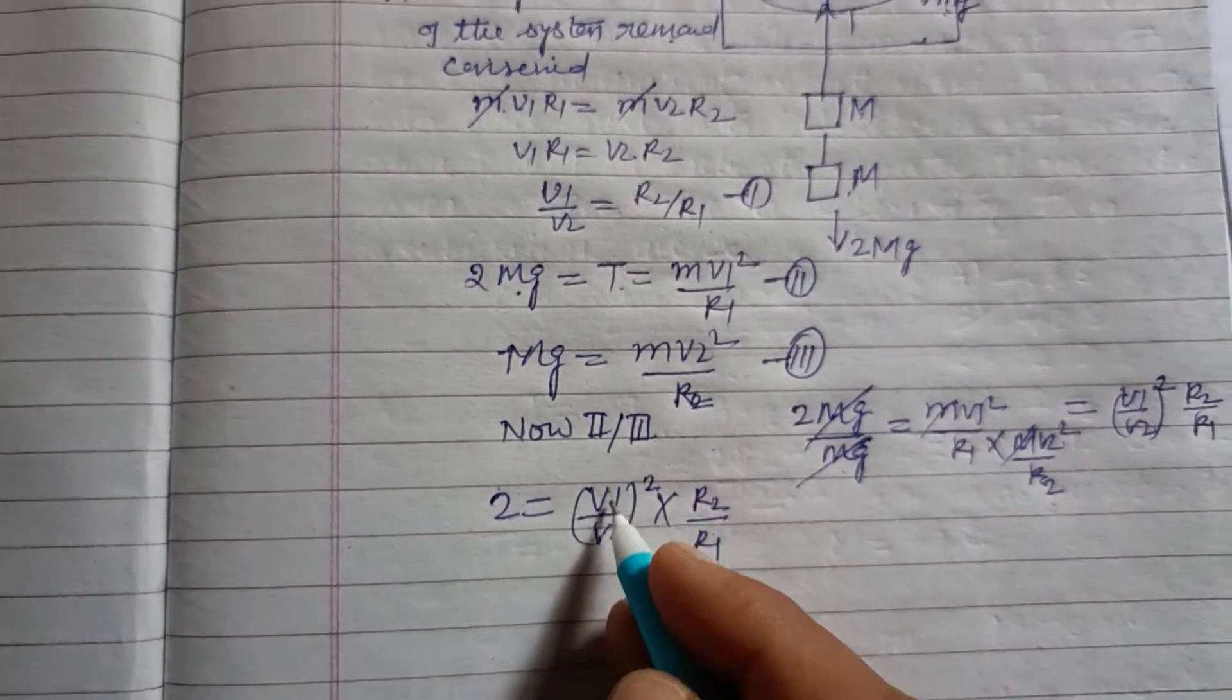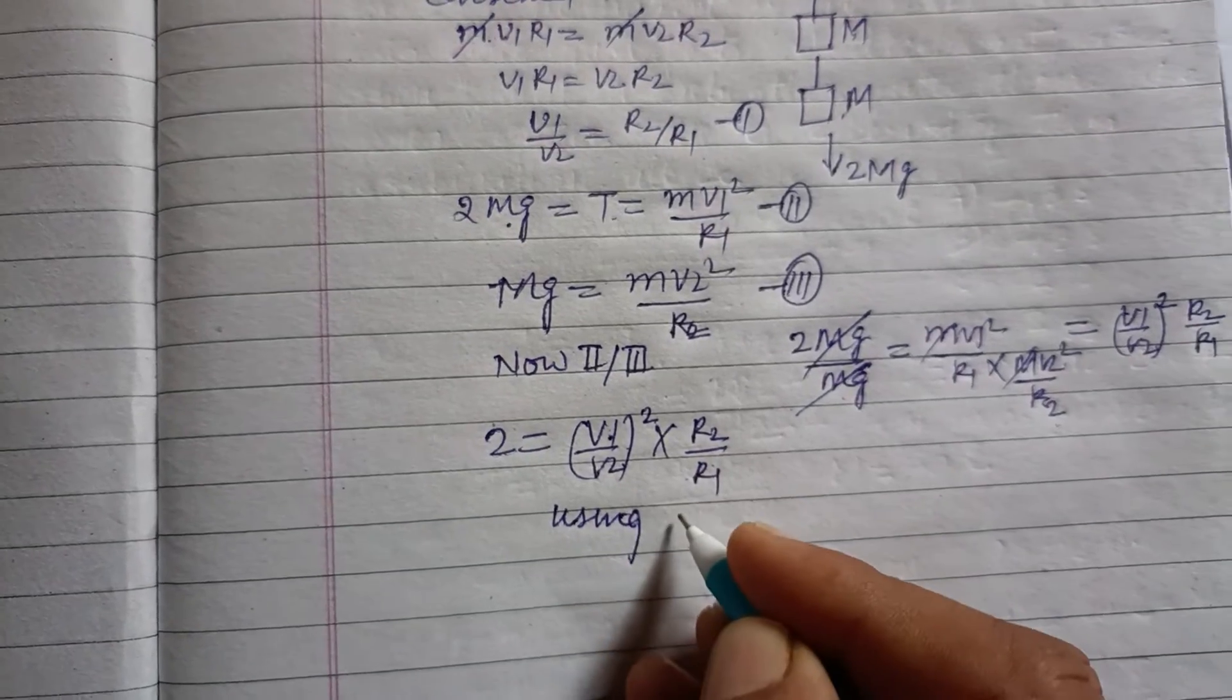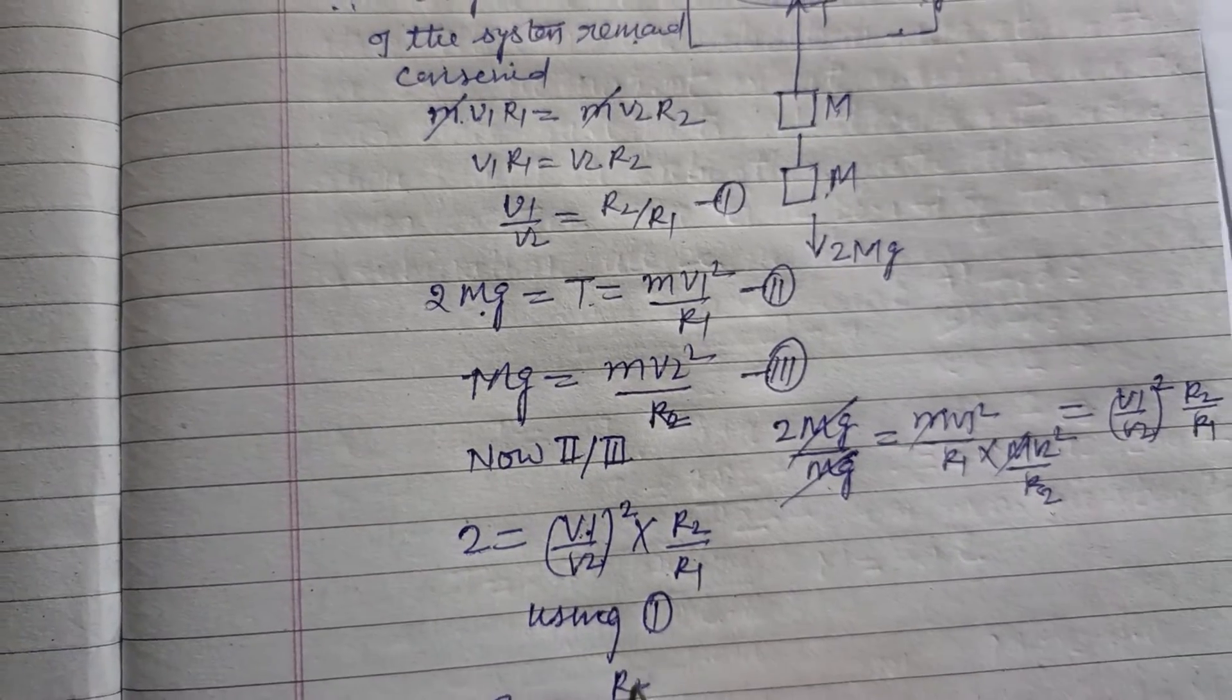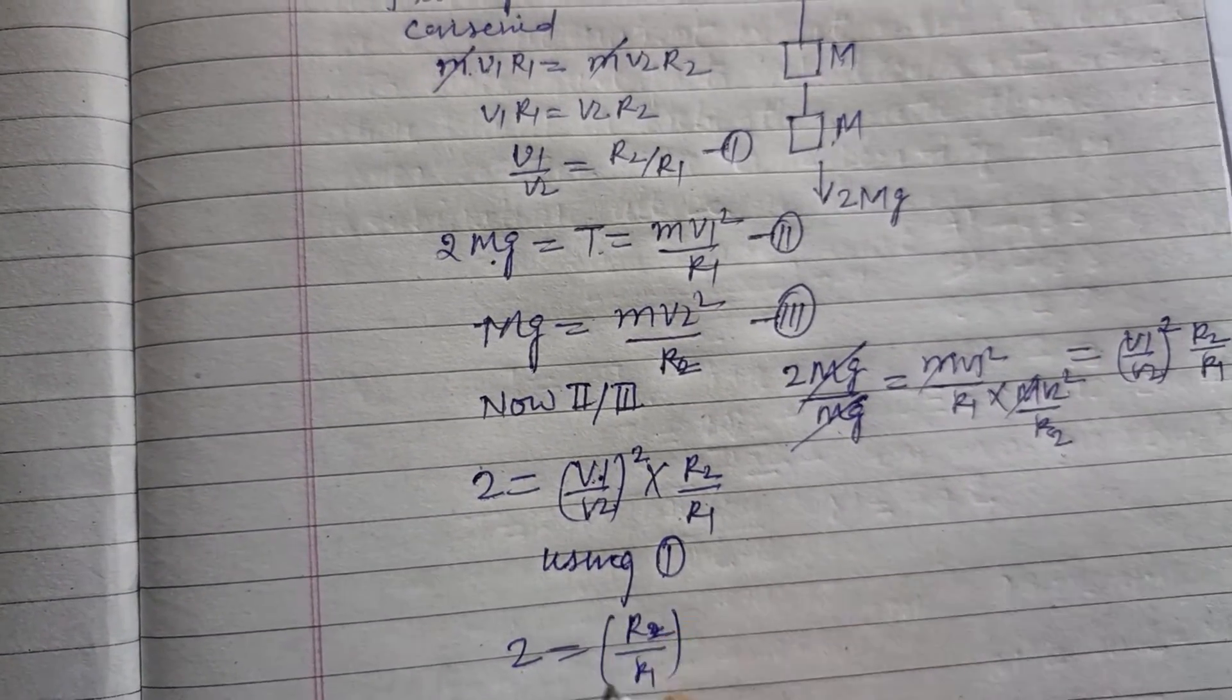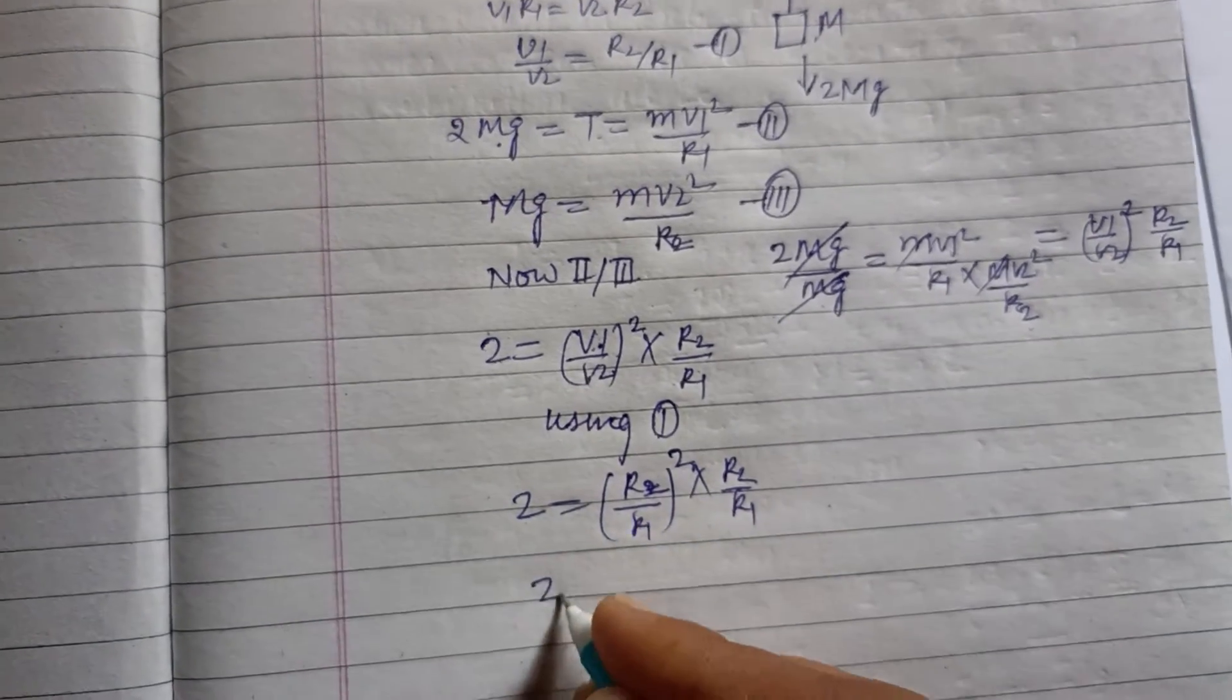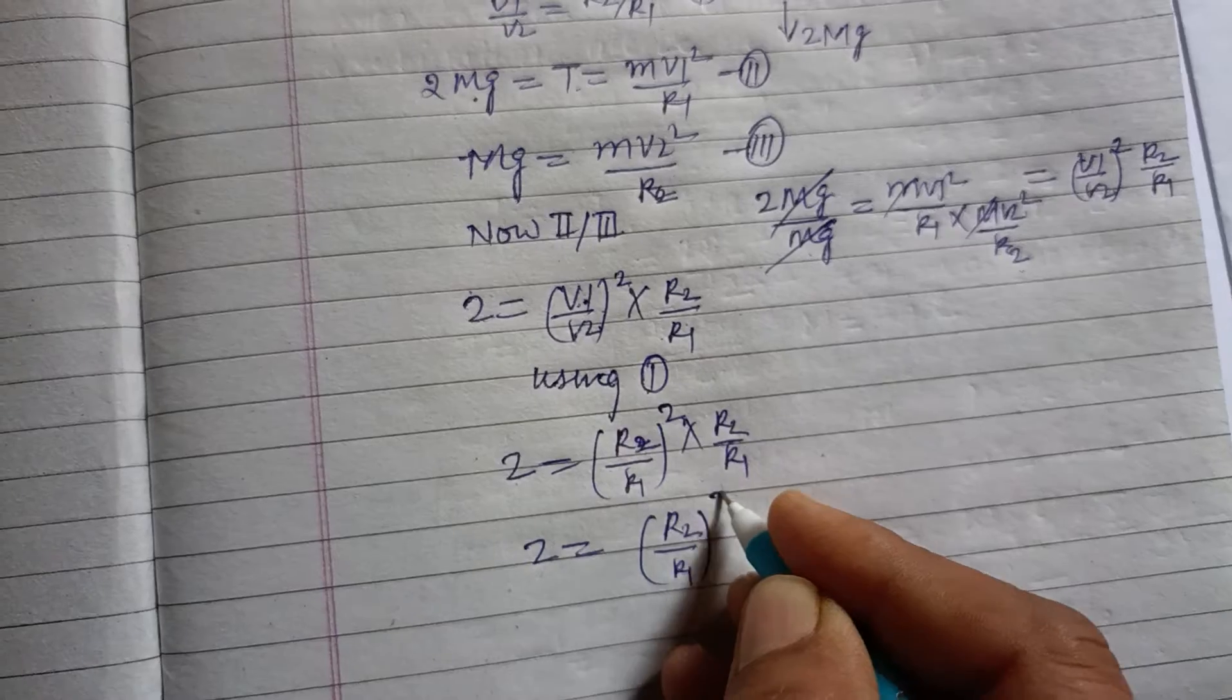From first, we put value of V1 upon V2 using first equation. V1 upon V2 is R2 over R1 whole squared, times R2 upon R1. So 2 equals R2 upon R1 to the power 3.